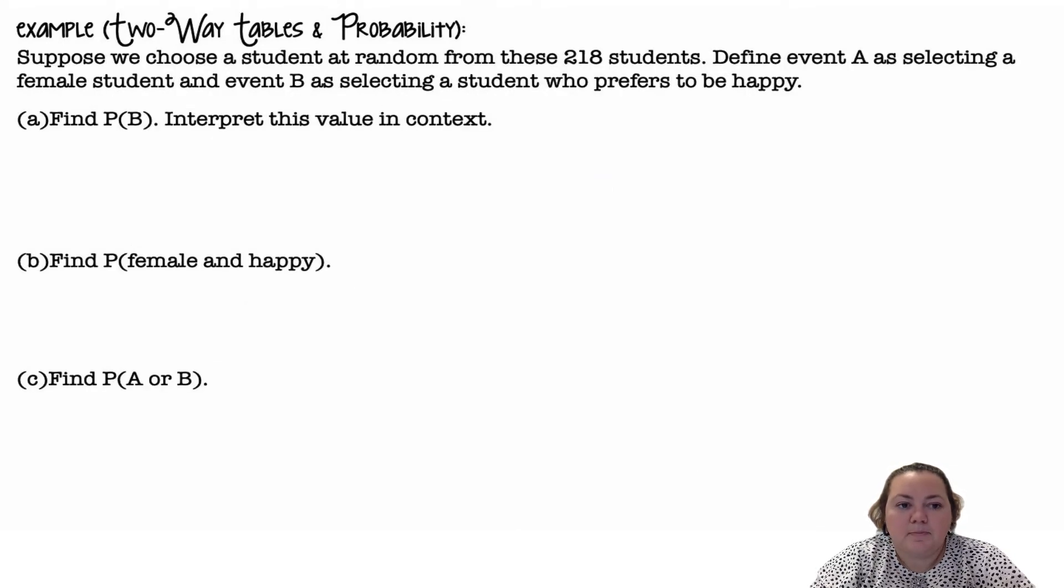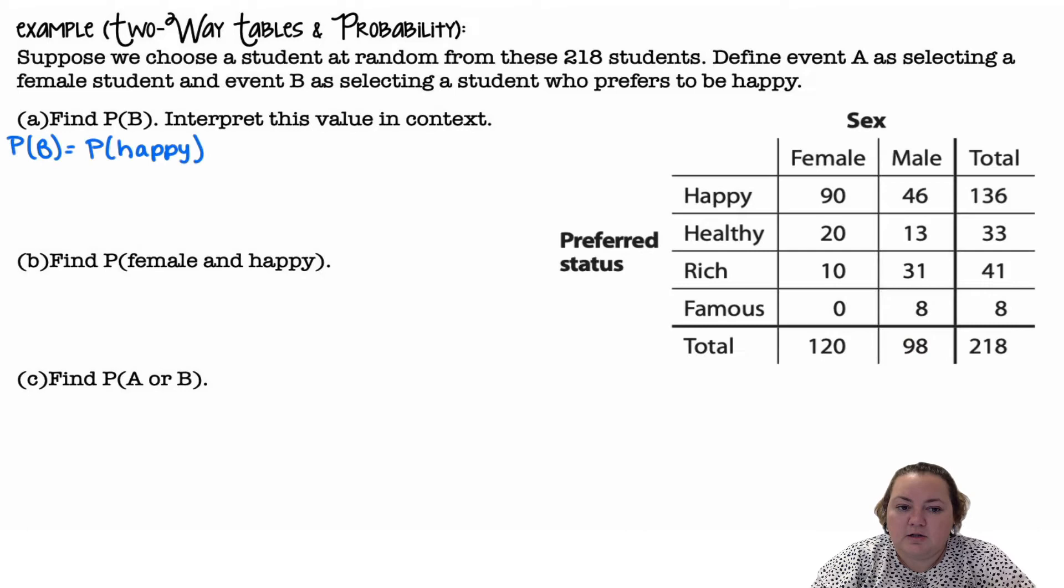Suppose that we chose a student at random from the 218 students. Define event A as selecting a female student and event B as selecting a student who prefers to be happy.